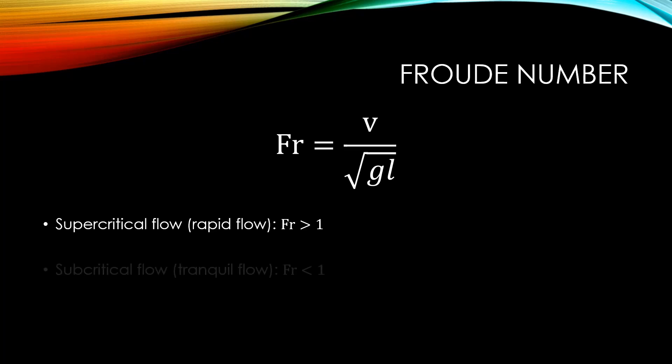On the contrary, if the gravitational force is greater than the inertial force and our Froude number is smaller than 1, we can call this flow subcritical flow or tranquil flow. Tranquil flows are characterized by having greater depths and slower velocities than supercritical flows.